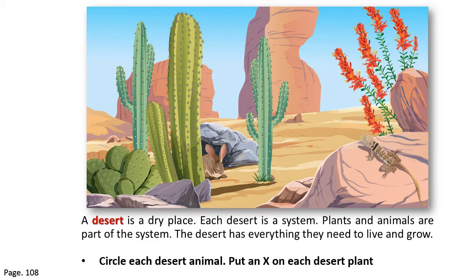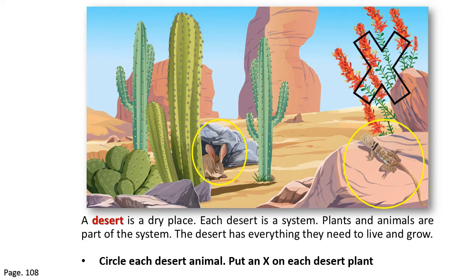In this picture, we can notice some kinds of plants and some kinds of animals. Our question is to circle each desert animal — let's circle the rabbit and let's circle the lizard. The other part of our question is to put an X on each desert plant — let's put an X on this flower right here and an X on the cactuses.